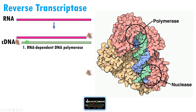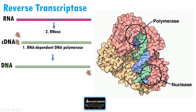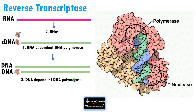Now the hybrid has both RNA and DNA. This RNA should be cleaved. The second activity of reverse transcriptase is nuclease activity, or ribonuclease activity — it can cleave this RNA strand. In order to integrate into the genome of the host, this cDNA should be double-stranded. So the same enzyme makes the second strand using this DNA template.